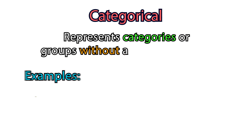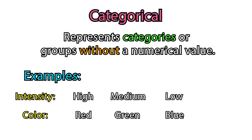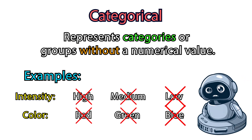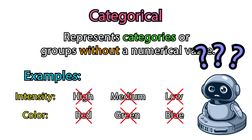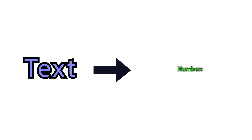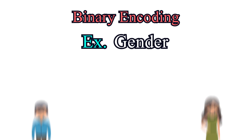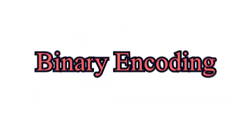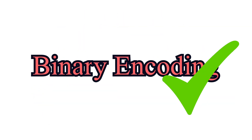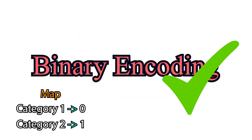Categorical data represents categories or groups and labels data without a numerical value. AI models fully consist of numeric operations, so how do we feed text data? You can encode text into numbers! The easiest example is a binary example like gender — you can just assign 0 to male and 1 to female and use those numbers in model training. This is a common practice and is always used for encoding binary variables.